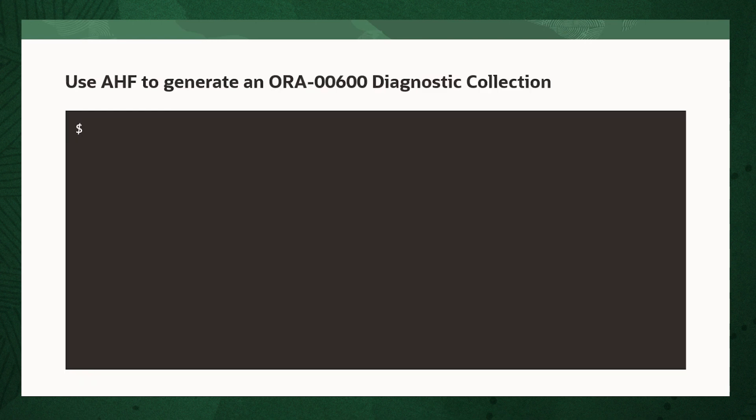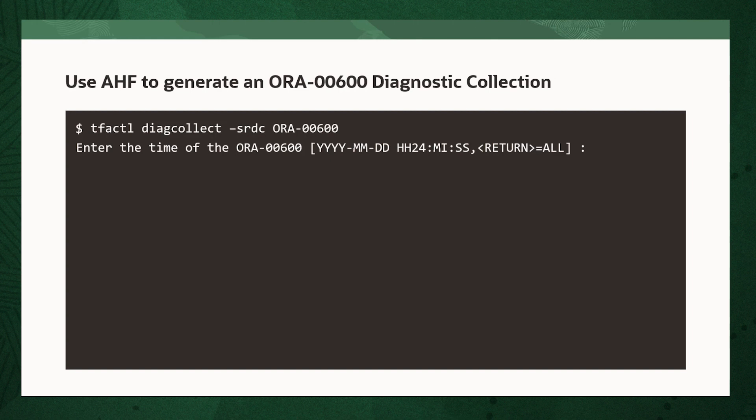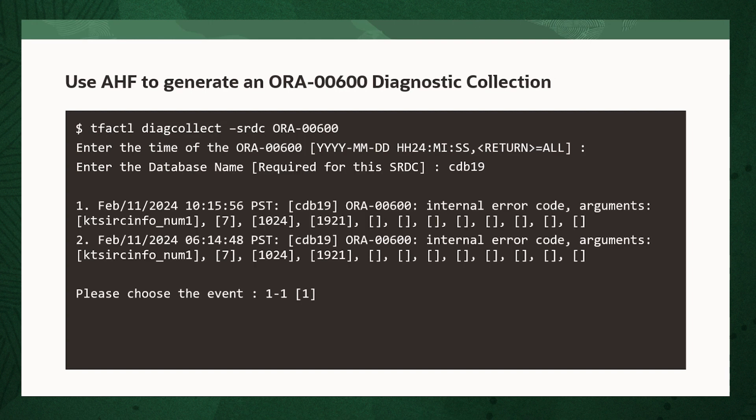You log into the machine where the ORA-600 occurred, and as the Oracle user, run the command: tfactl diagcollect -srdc ora-600. You'll be prompted to enter the date and time of the ORA-600 you're interested in, and if you're not sure, just press return. The same applies for the database name.